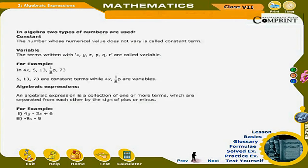In algebra, two types of numbers are used. Constant: the number whose numerical value does not vary is called a constant term. Variable: the terms written with x, y, z, p, q, r are called variables. For example, in 4x, 5, 13, (1/8)p, 73 — the values 5, 13, 73 are constant terms while 4x and (1/8)p are variables.